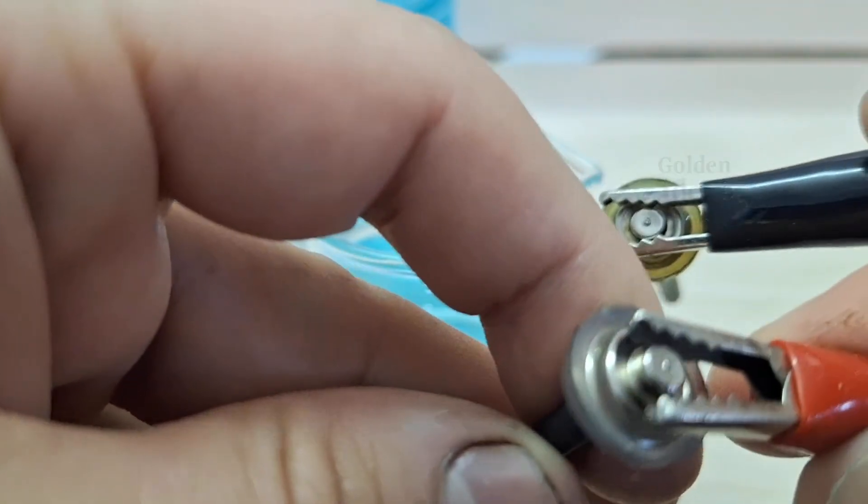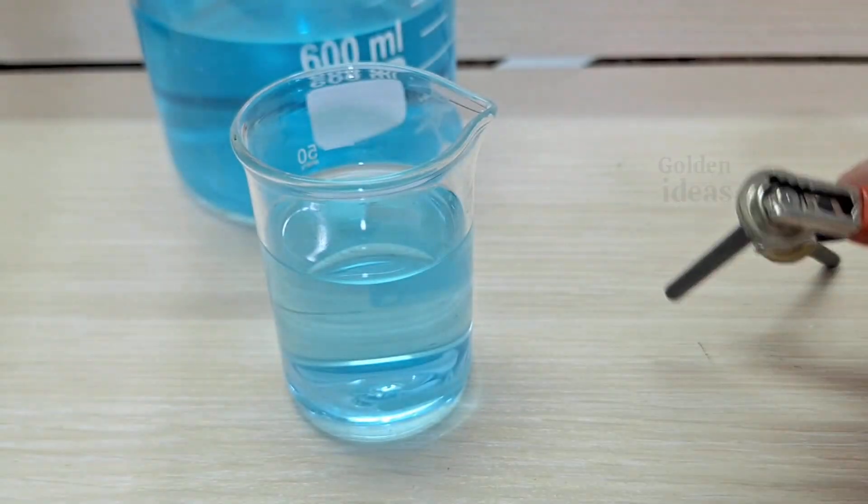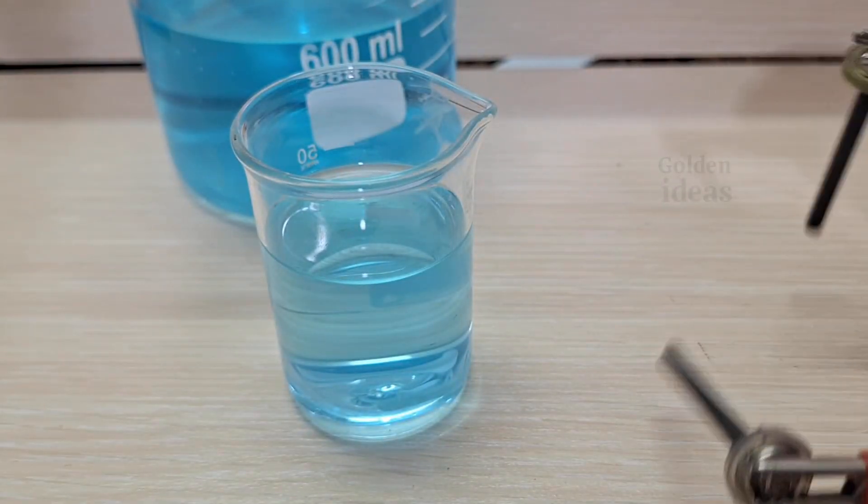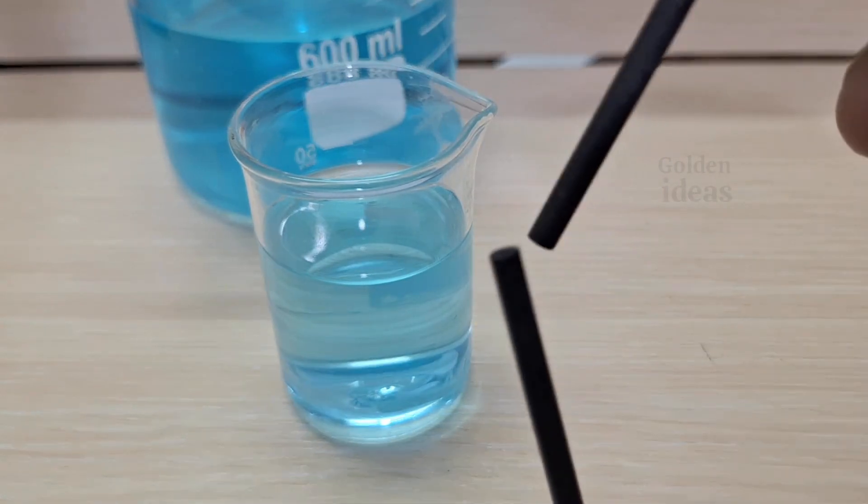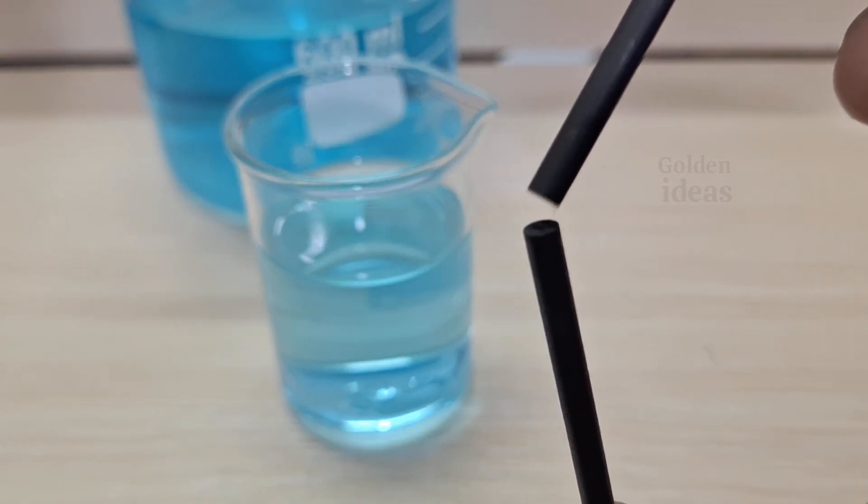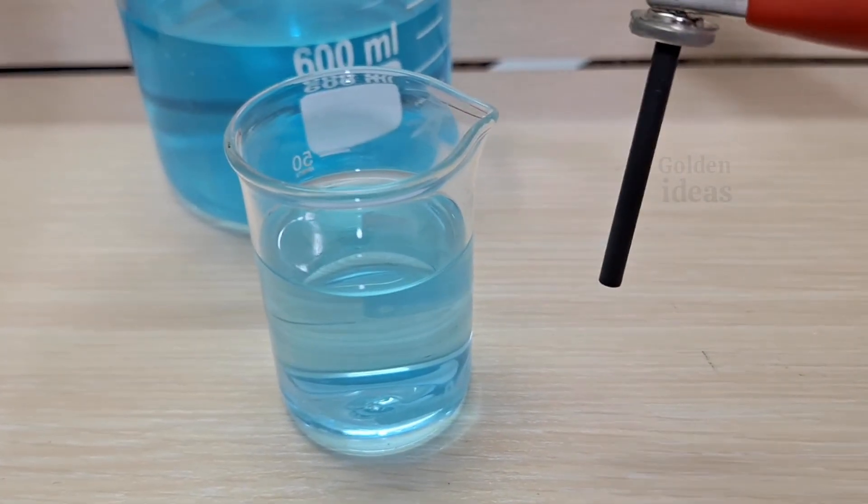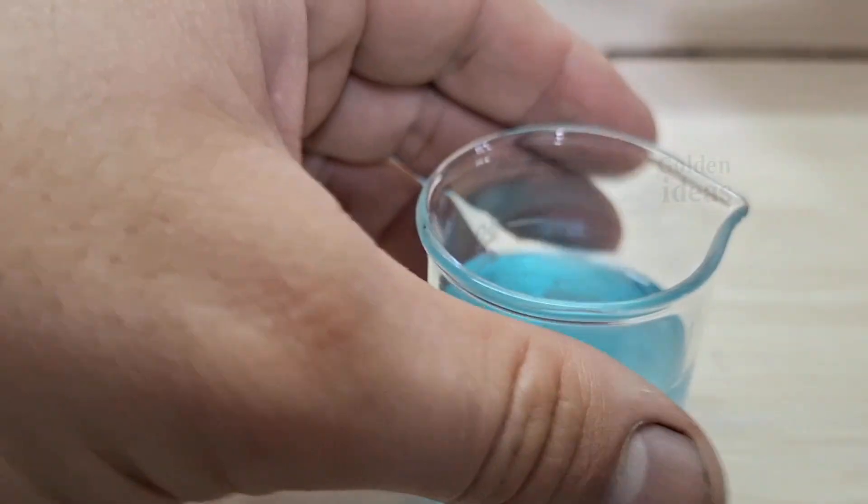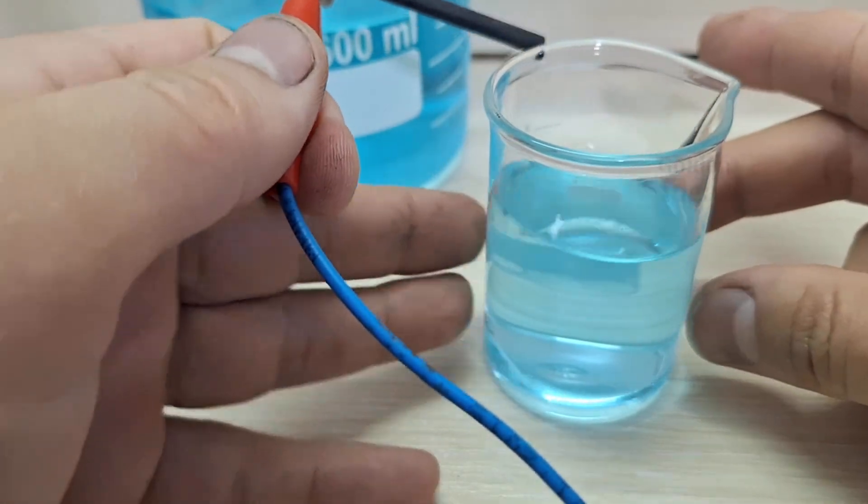Now I need to place the electrodes on opposite sides of the beaker, making sure they don't touch each other. You can also use other types of containers instead of a beaker, as long as the container is resistant to both heat and acid. That's important because electrolysis can generate a significant amount of heat. The chloride solution inside the beaker is acting as the electrolyte, that is, the conductive medium for the electricity.